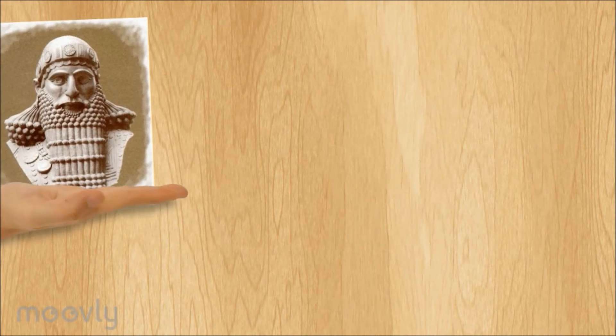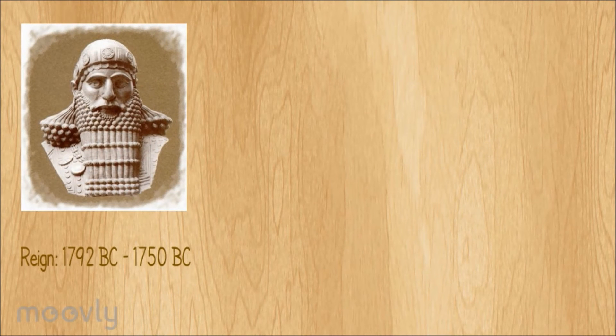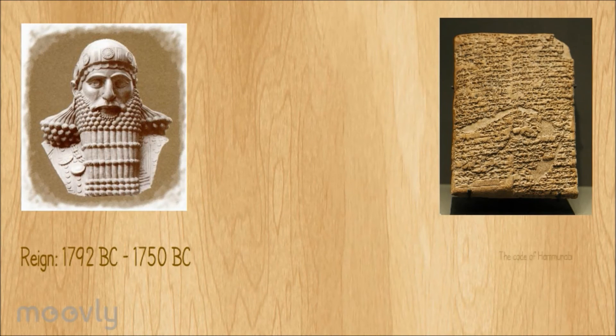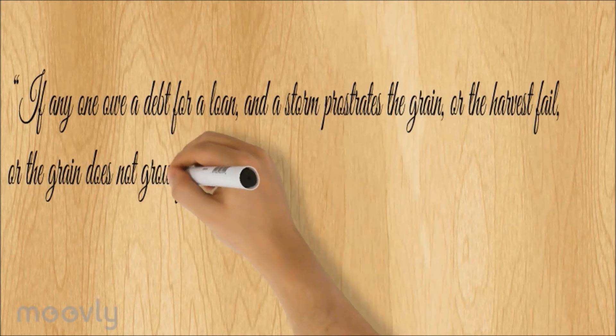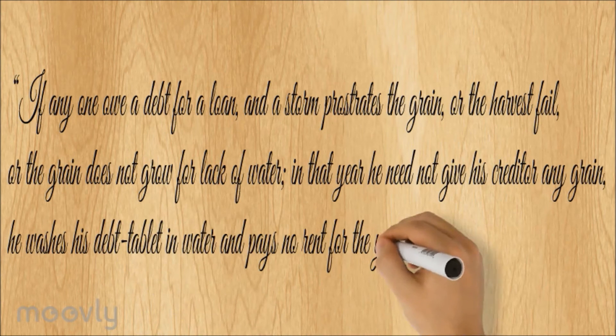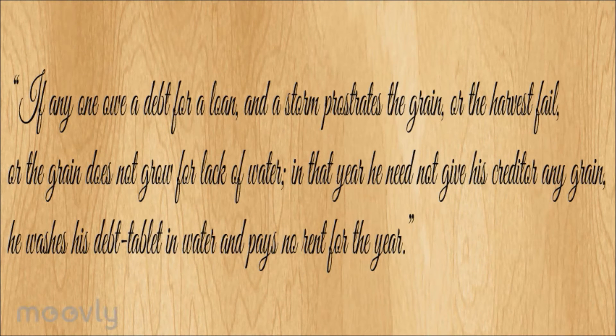Around 1792 BC Hammurabi ruled over Babylon. During his reign, he has enacted what is known as the Code of Hammurabi. This code contains a set of rules that regulated the life of Babylonian people. The 48th law of the code states the following: If anyone owe a debt for a loan and the storm prostrates the grain or the harvest fails or the grain does not grow for lack of water, in that year he need not give his creditor any grain. He washes his debt tablet in water and pays no rent for the year.